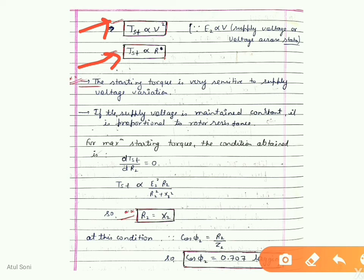To find the condition for maximum starting torque, we differentiate the starting torque equation with respect to rotor resistance and set it equal to zero. This gives the condition R2 = X2: when the rotor resistance is exactly equal to the rotor standstill reactance, the rotor develops maximum starting torque. At this condition the power factor is 0.707 lagging.